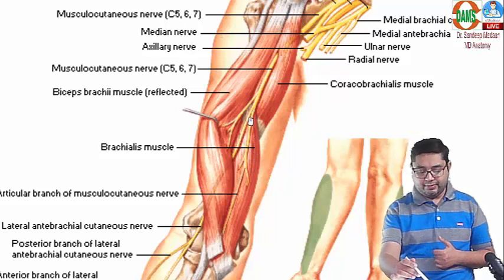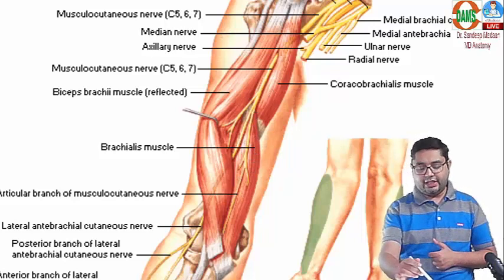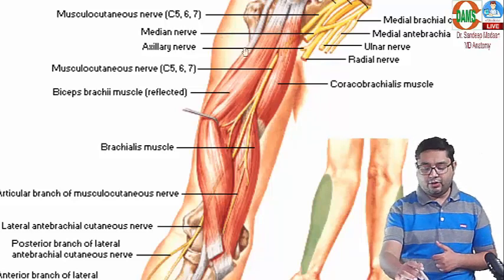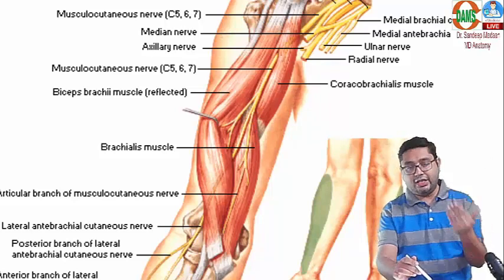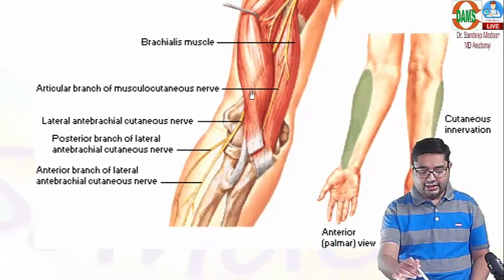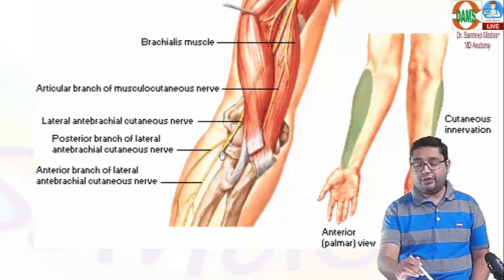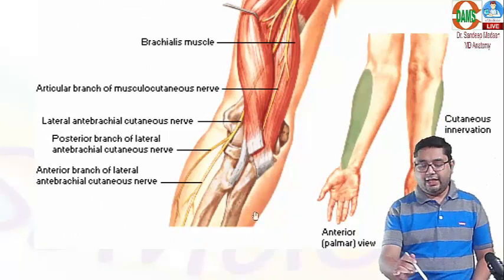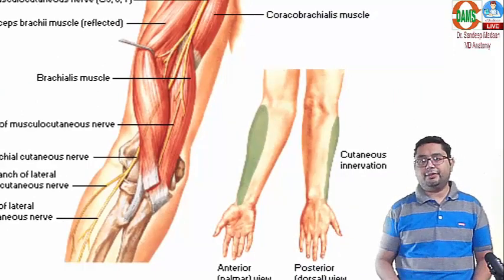After having supplied the coracobrachialis, biceps, and brachialis — the whole muscular part in the anterior compartment of the arm — the nerve continues as the lateral cutaneous nerve of the forearm. In this diagram we can see the territory supplied by the musculocutaneous nerve.